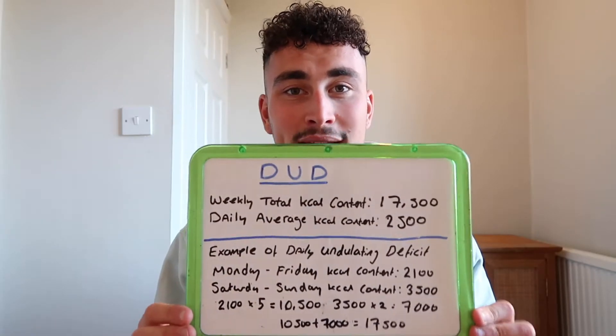So what is a daily undulating deficit and how do we use it within someone's diet? Basically, it allows an individual to have a select few days of higher calorie content even while dieting, but then we reduce the rest of the week's calorie content to ensure the weekly overall total is still within a deficit. This way an individual can still adhere to their diet while attending social events. I've written up a case study to give you a bit more insight on how it works in practical terms.